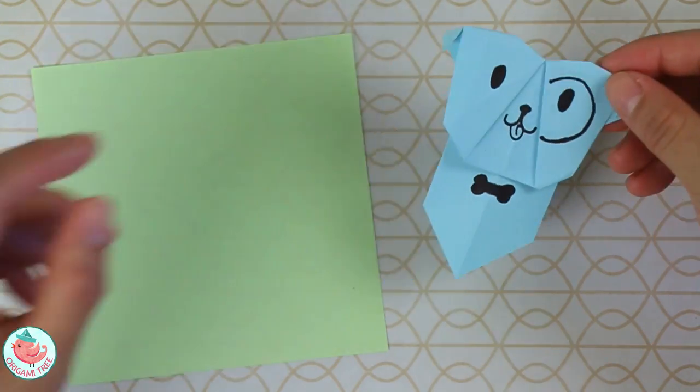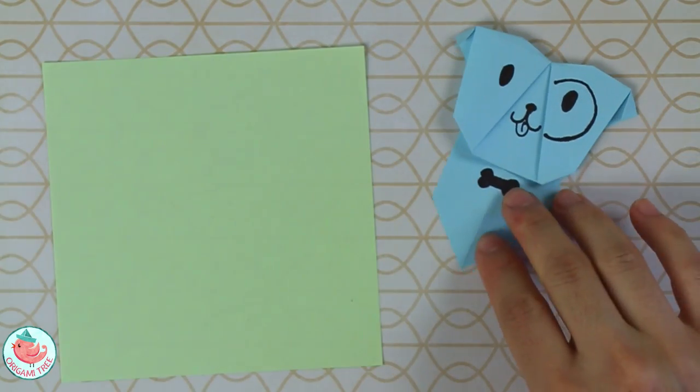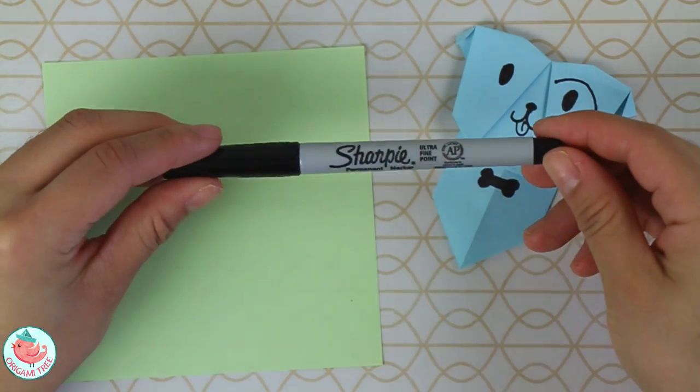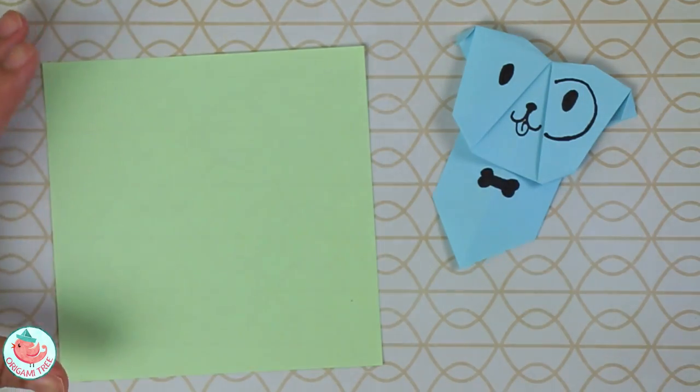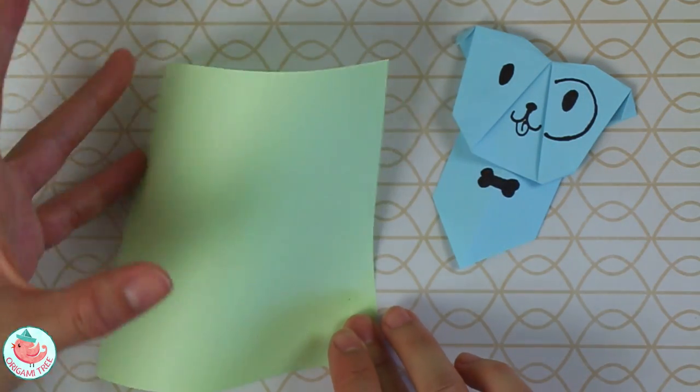To make the origami dog bookmark, you're going to need a square sheet of paper. This is a four-inch square that I'll be using. You'll also need a writing utensil—I'm using an ultra fine point Sharpie because I have it lying around and really like it.